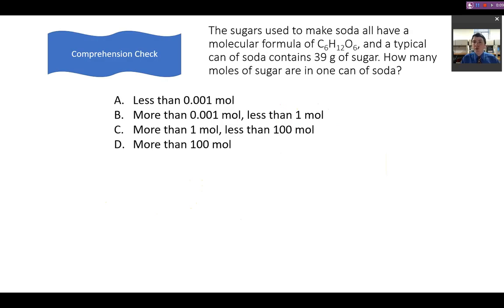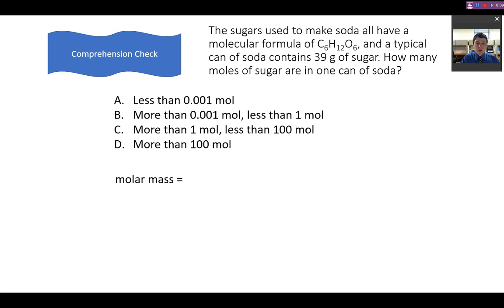Let's try an example. Sugars used to make soda typically have the formula C₆H₁₂O₆ — that is sucrose — and a typical can of soda contains about 39 grams of sugar. How many moles of sugar are in one can of soda?